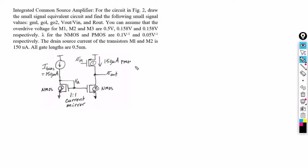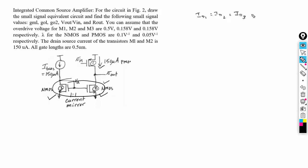In this question, a PMOS transistor current source amplifier is given, and the biasing current of the PMOS transistor is decided by a current mirror pair circuit. This current mirror pair is a 1:1 ratio, which means the drain current of the third transistor equals the current of the second transistor. Since the first and second transistors are in series, we can write ID1 = ID2 = ID3 = 150 microamperes.